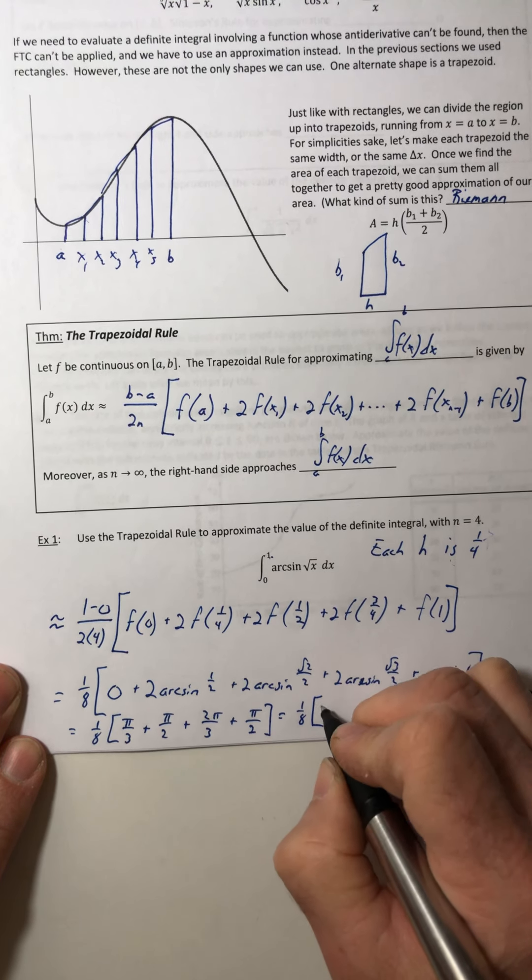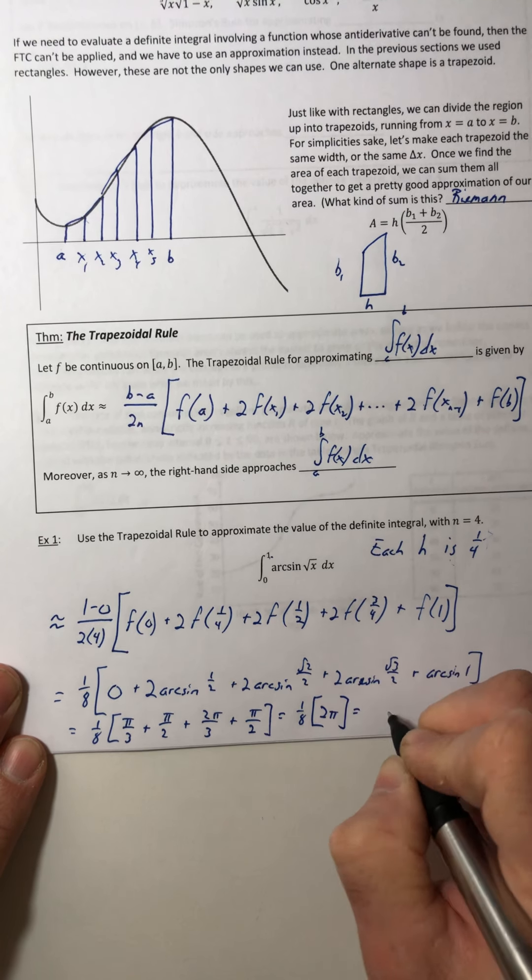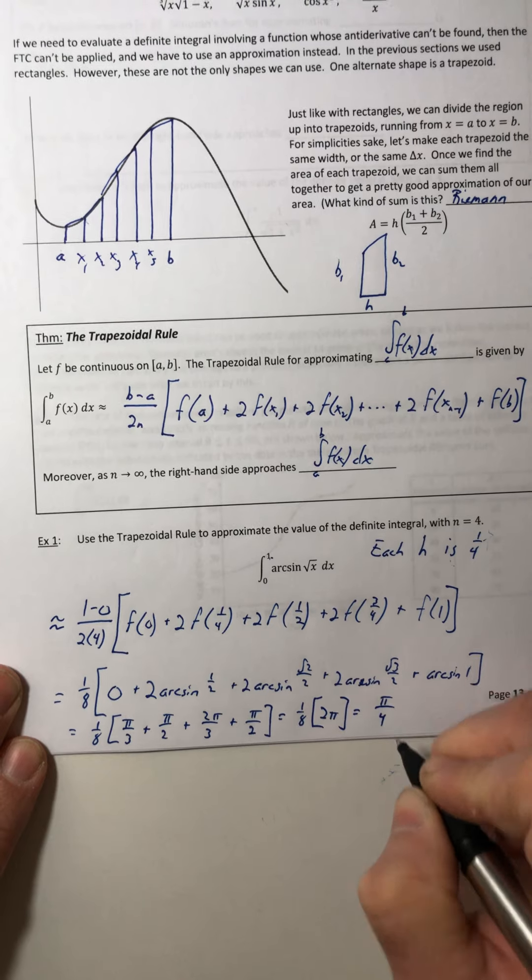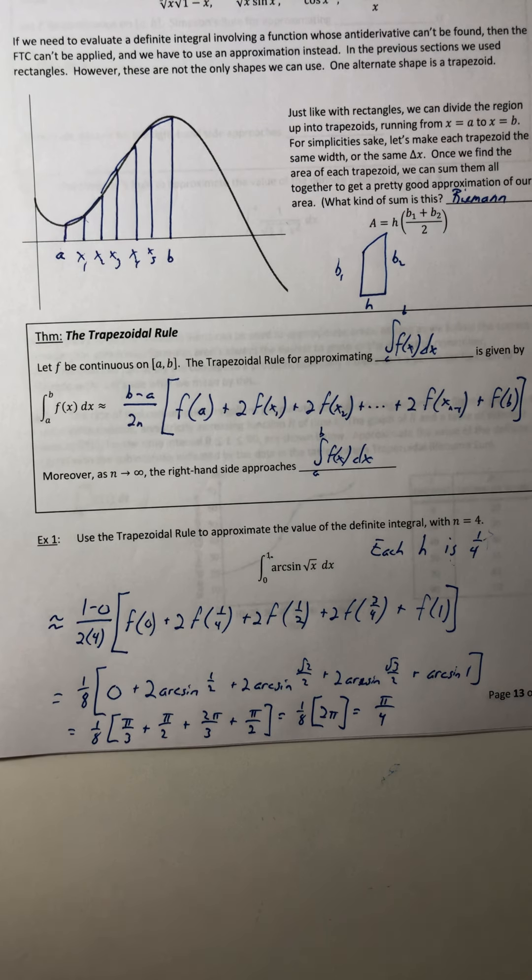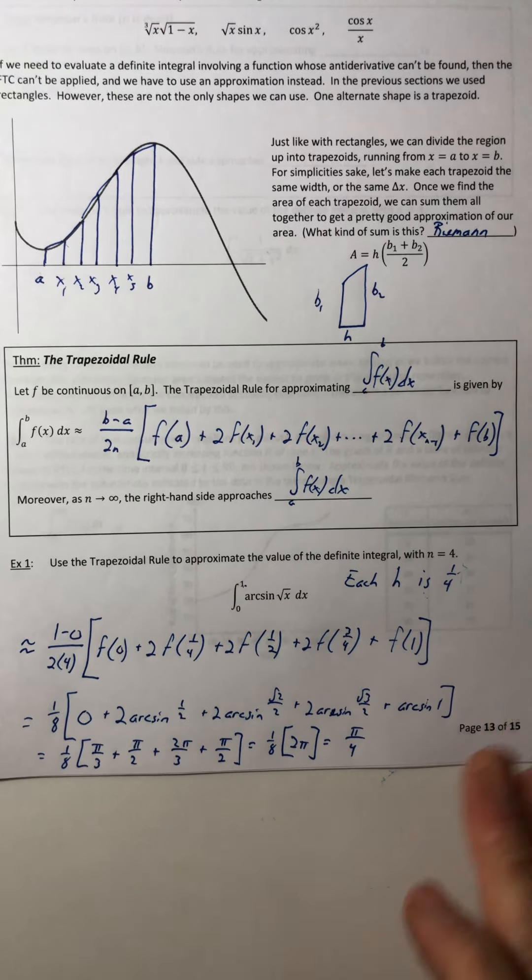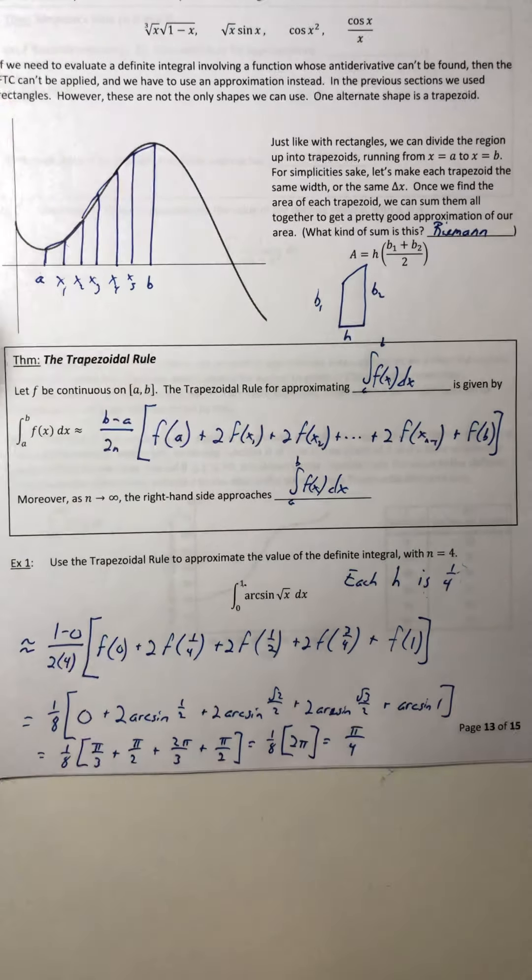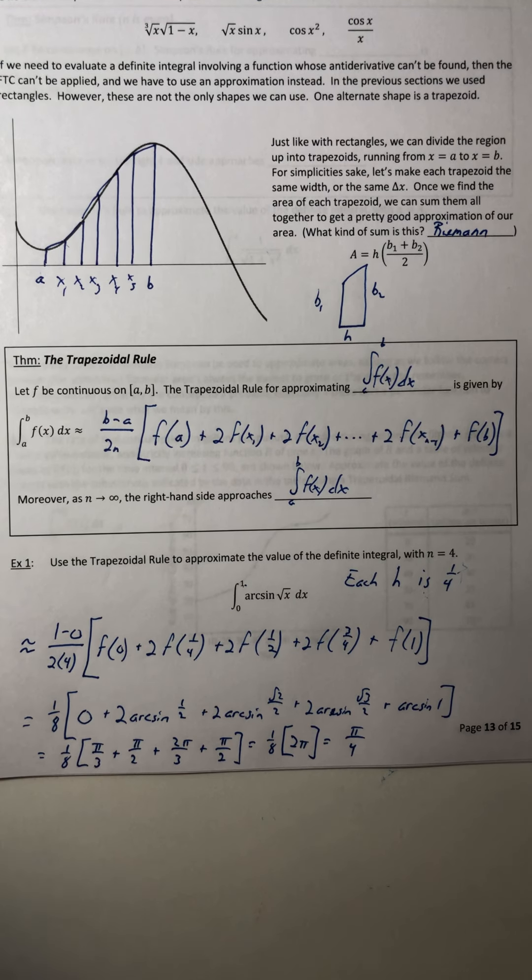So you have one eighth times two pi, or pi over four. Okay, so that's the whole synopsis of the trapezoidal rule, how it came to be, the formula and how to use it. So in the next video we'll look at a different rule.